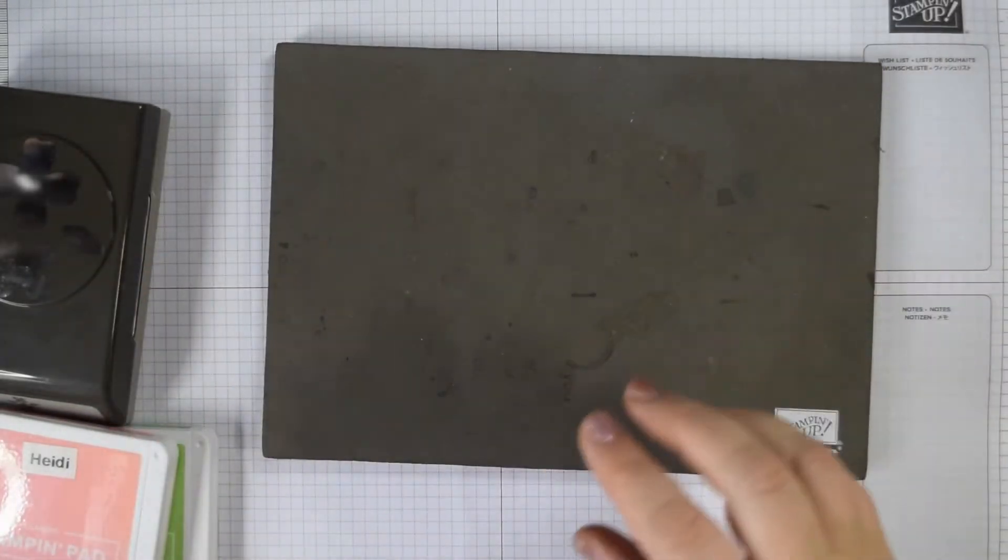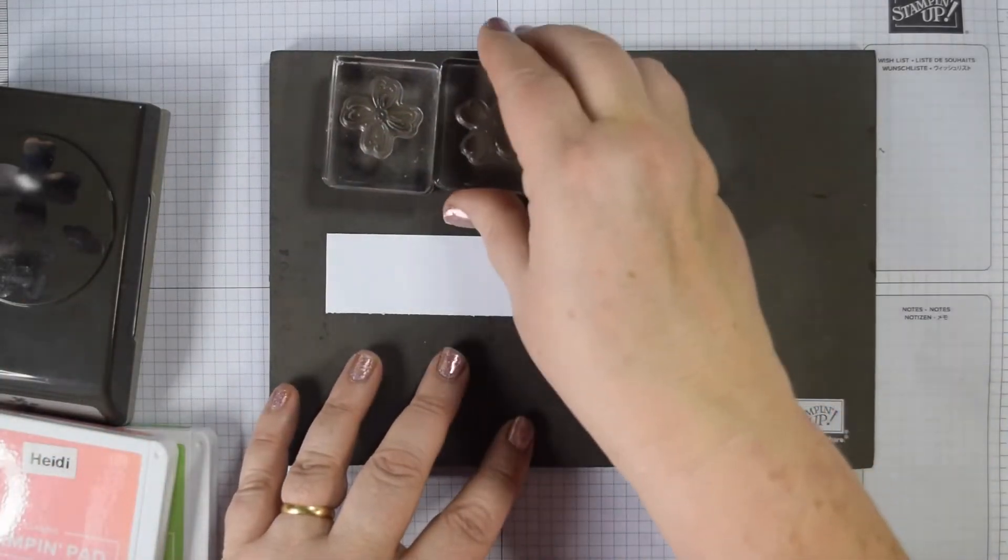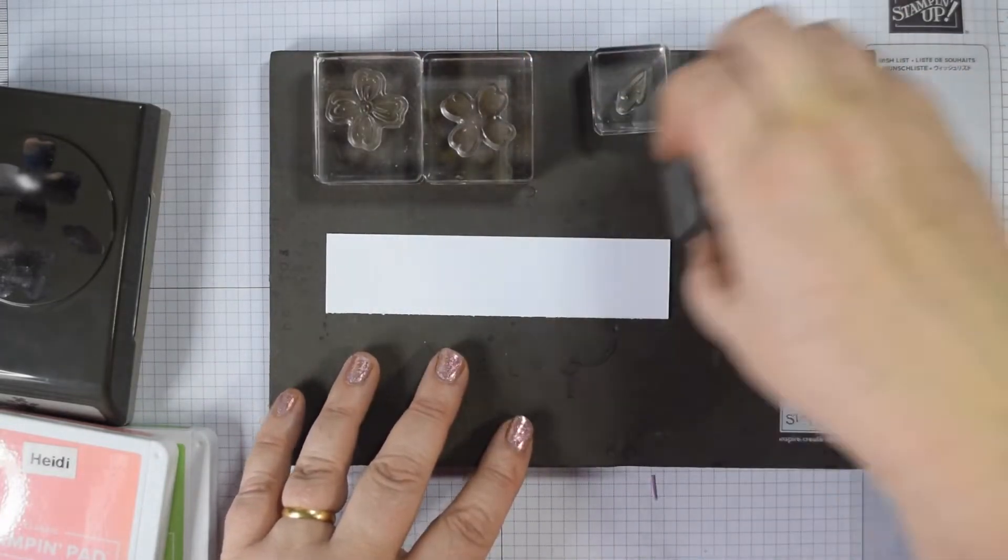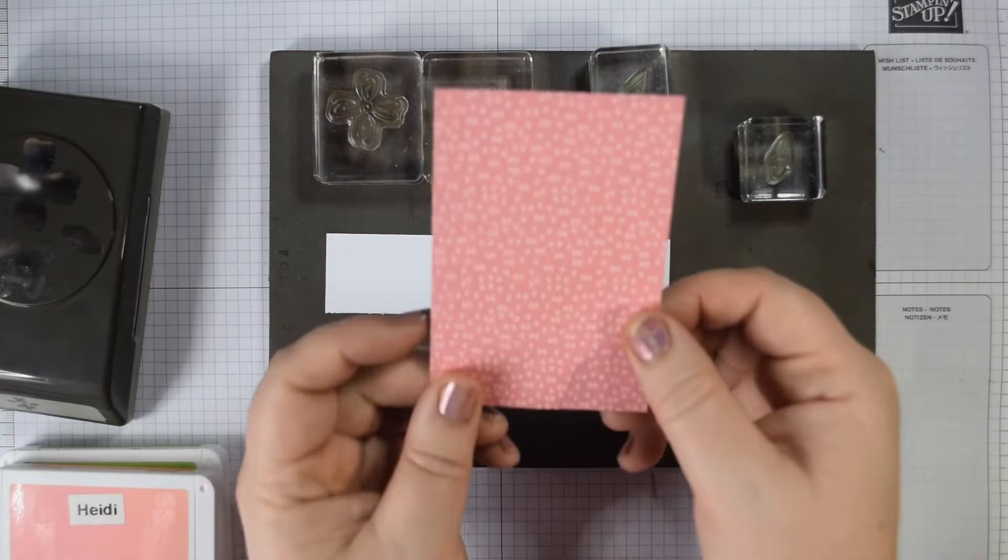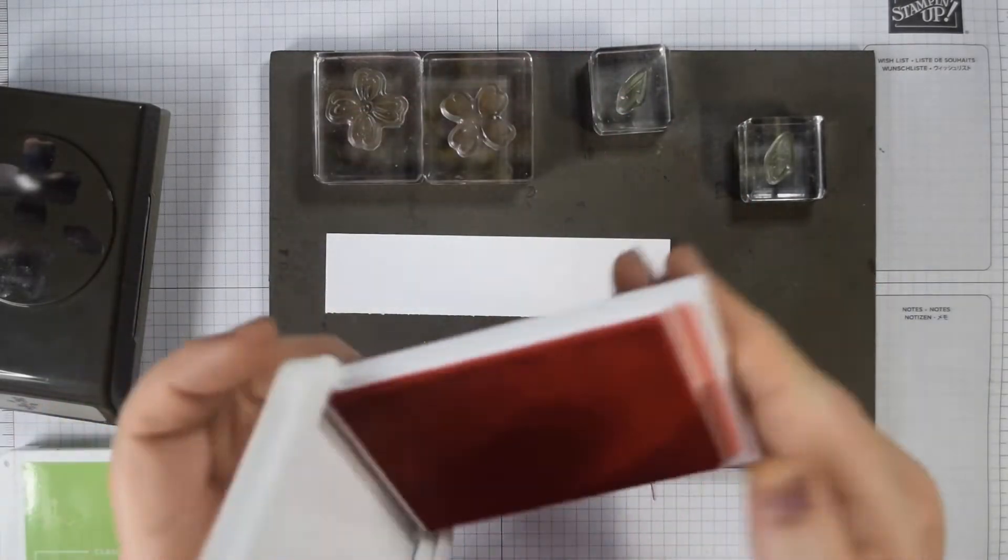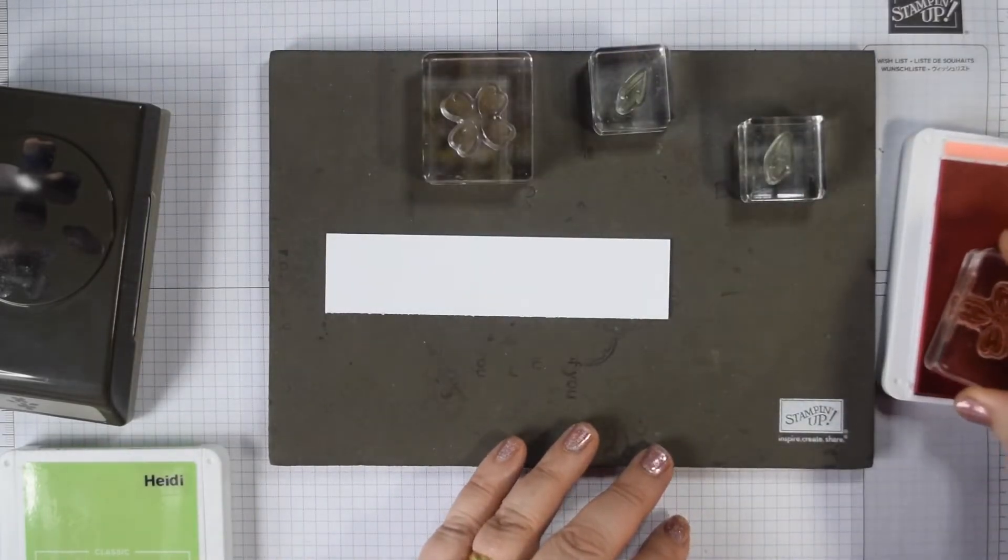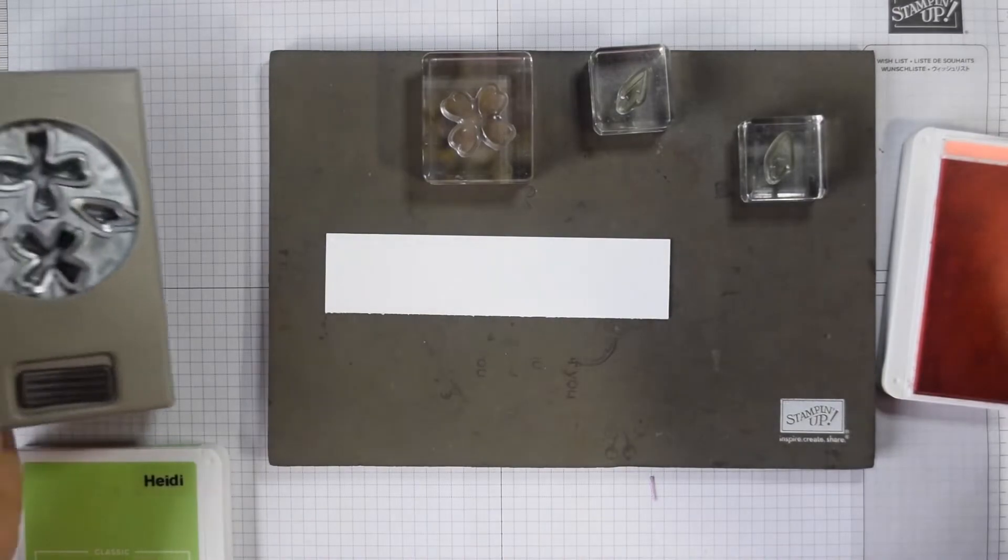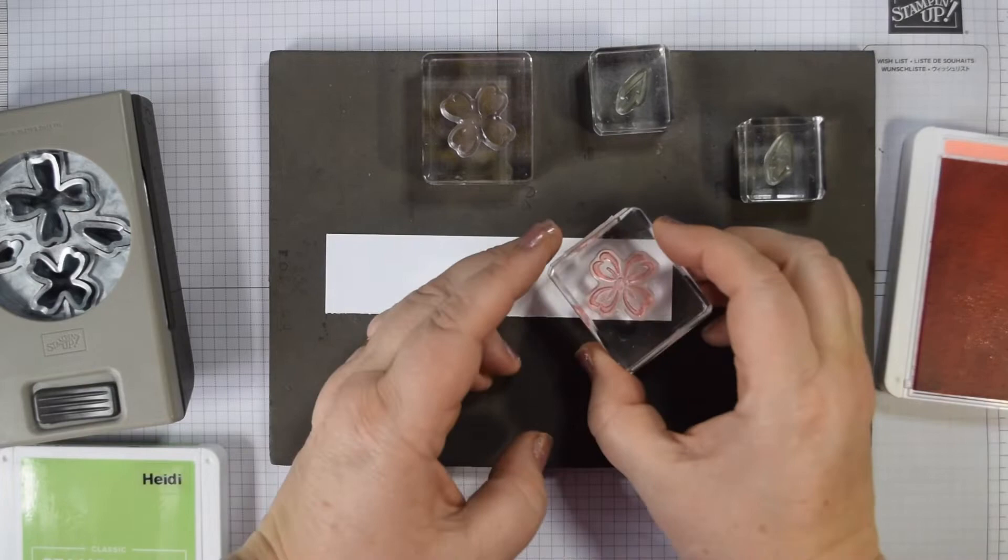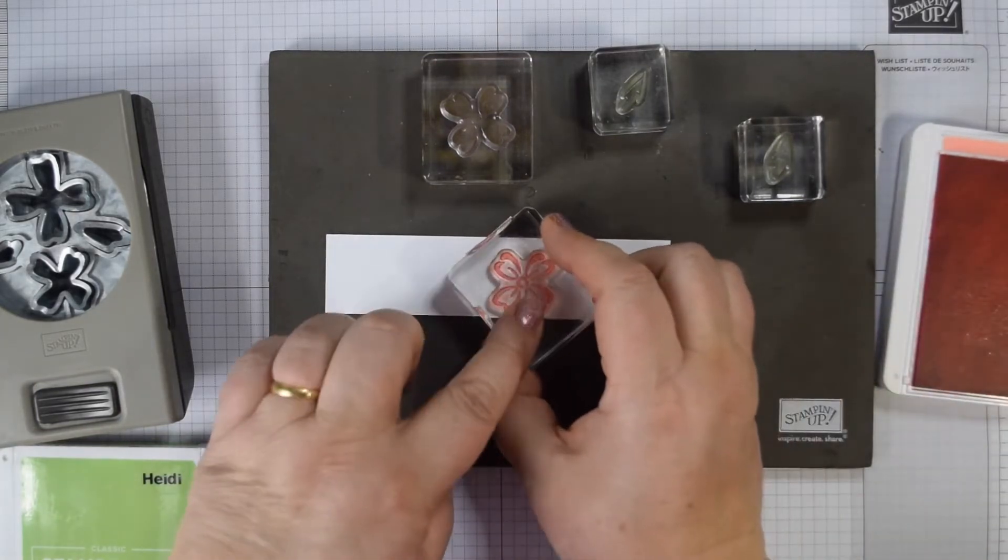We'll start off by doing our stamping. I've got the larger flower on two blocks - an outline and an infill, and the same with the leaves. I thought I'd use this paper here, which is the Flirty Flamingo. You could use any colour that takes your fancy. I'm going to do the outline. This is where I just orientate myself. It's going to go in sideways. I'm just going to pop a couple of those on there like so.